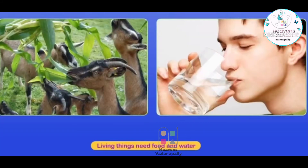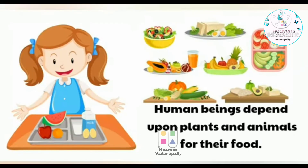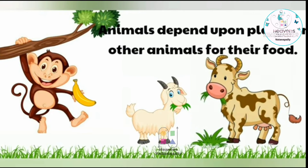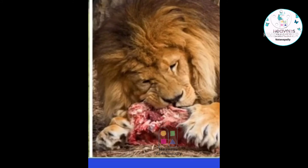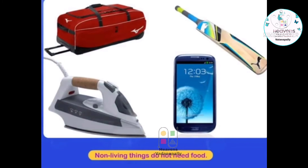Living things eat and drink to sustain their life — they need food and water to live. We depend upon plants and animals for our food. Like humans, animals also need food and water. Some animals eat plants, and other animals eat the flesh of small animals. Plants also need food and water; they make their food in the presence of sunlight. The leaf is the kitchen of the plant. Non-living things do not need food and water.